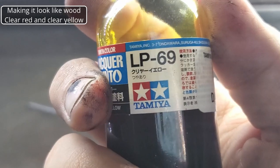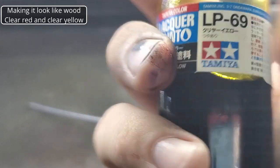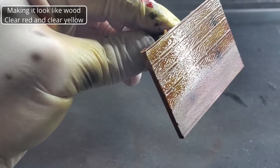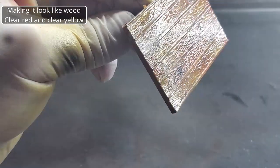With the red done, we've cleaned out the brush and we've switched to some LP-69 clear yellow. And for this we do want to go ahead and put down a full smooth coverage over the whole bed, front and back.